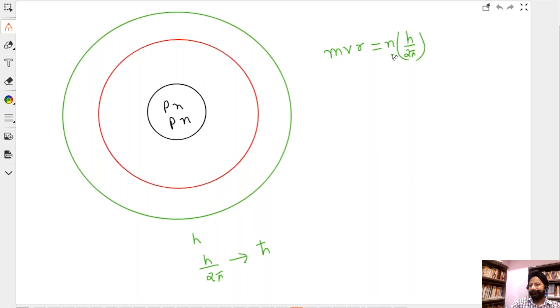Angular momentum has to be one times this, two times this, three times this. So let's say one times this gives you this energy level, two times this gives you here.